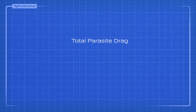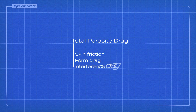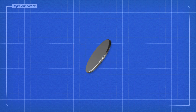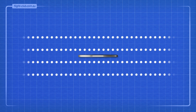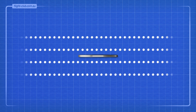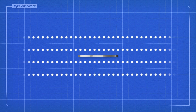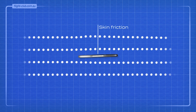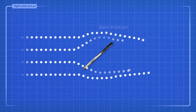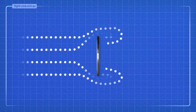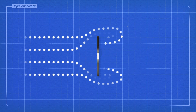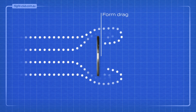Total parasite drag is comprised of skin friction, form drag, and interference drag. Take this flat plate flying through the air. At zero degrees angle of attack to the airflow, the drag is all skin friction. At 90 degrees to the relative airflow, the drag is all form drag.